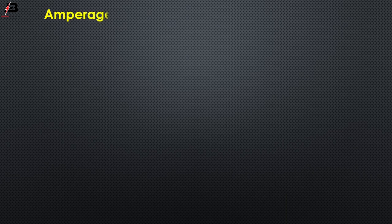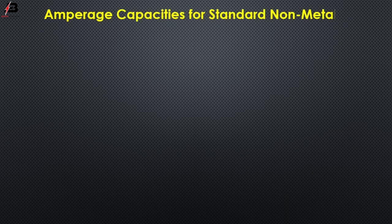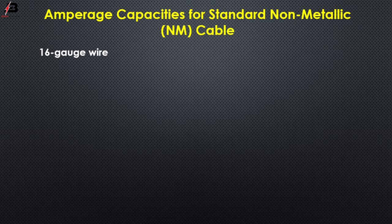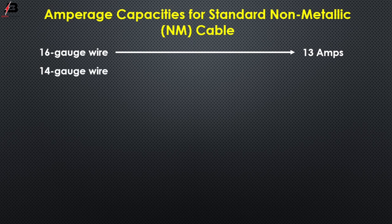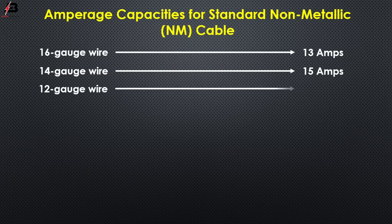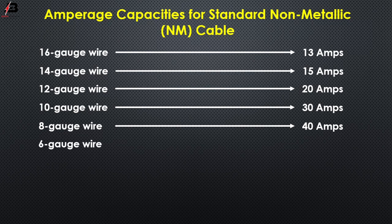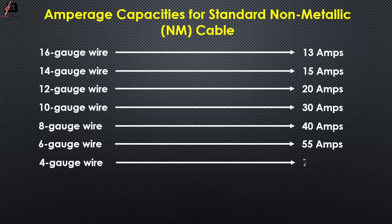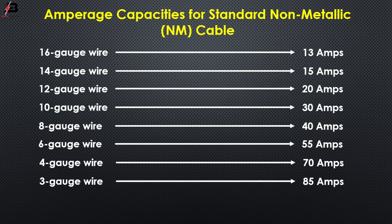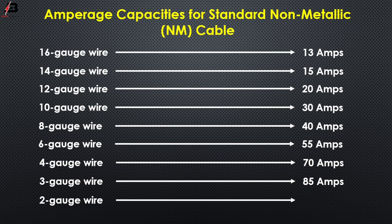For standard non-metallic cables, the ampere capacities are: 16 gauge oil — 13 amperes; 14 gauge oil — 15 amperes; 12 gauge oil — 20 amperes; 10 gauge oil — 30 amperes; 8 gauge oil — 40 amperes; 6 gauge oil — 55 amperes; 4 gauge oil — 70 amperes; 3 gauge oil — 85 amperes; 2 gauge oil — 95 amperes.